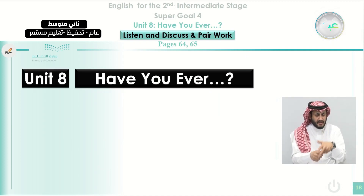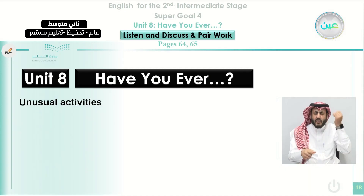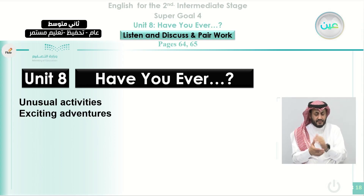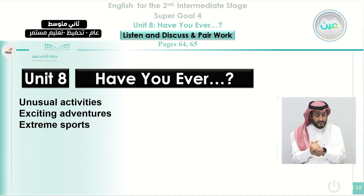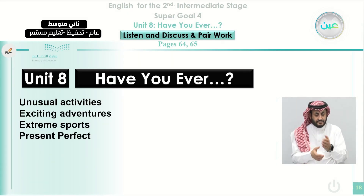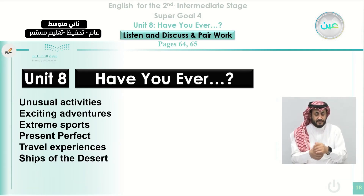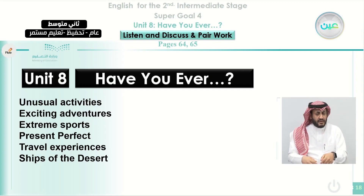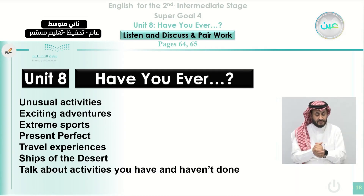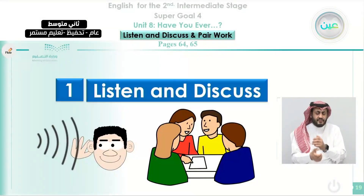Our new unit is unit 8, titled 'Have You Ever?' In this unit, we are going to learn about unusual activities, exciting adventures, extreme sports, the present perfect, travel experiences, and ships of the desert. We will read an interesting passage about camels — known as the ships of deserts — and talk about activities you have and haven't done. We start our main class today with section one: 'listen and discuss.'